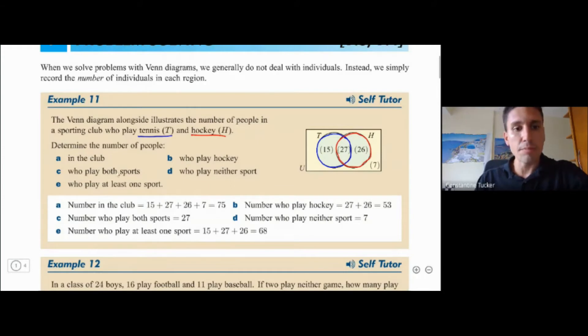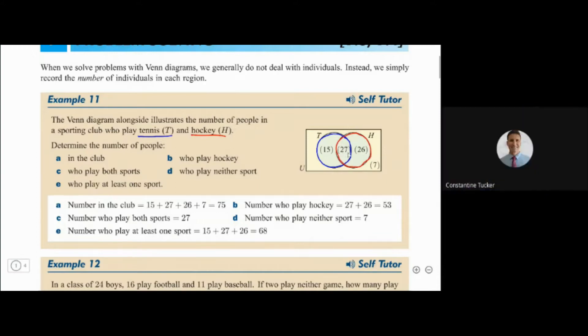Now if they say how many people play both? So any question that involves both means we have to go in the middle. So in this case that would be that 27 here. So all you have to do is just answer 27.